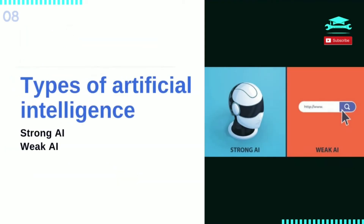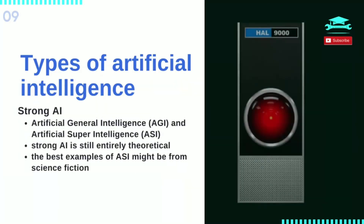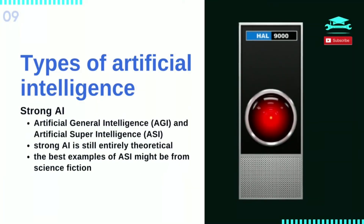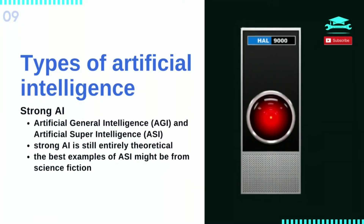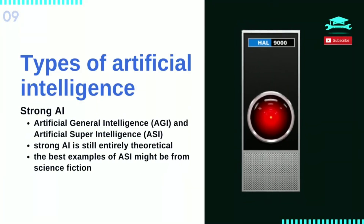There are two types of artificial intelligence: strong AI and weak AI. Strong AI is made up of artificial general intelligence and artificial super-intelligence.